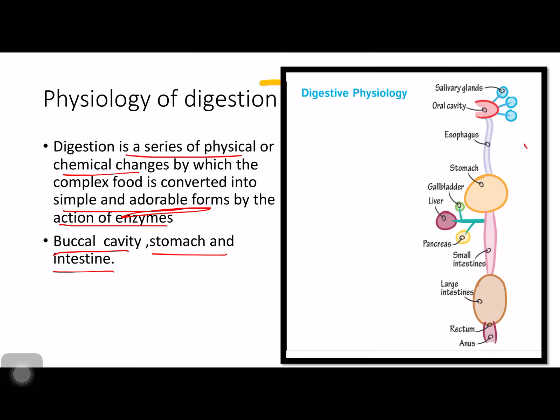Coming down we have the liver and pancreas, then gradually through the large intestine, the feces are held in the rectum and defecated through the anus. This is the total process or physiology of digestion. With the help of this diagram, I wanted to show in a systematic manner how the digestive system works from the oral cavity to the anus. If you learn this diagram, you will be learning many things, but you need to mention the enzymes and juices secreted from different organs. This is the basic digestive physiology flow diagram.